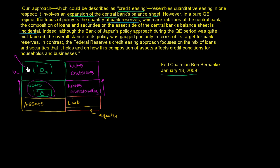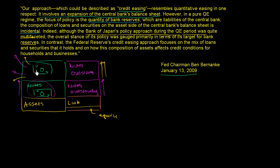Whenever they get this money in circulation, they do go out and buy assets, usually treasury assets. And indeed, although the Bank of Japan's policy approach during the quantitative easing period was quite multifaceted, the overall stance of its policy was gauged primarily in terms of its target for bank reserves. So when the Japanese were trying to fight a deflationary banking crisis, they kept printing money — kept increasing the liability side of their balance sheet — and they did use that money to buy a bunch of assets. But their focus was just how much they printed. They didn't really engineer where that money went, and weren't really trying to change what happens in the markets they were participating in.